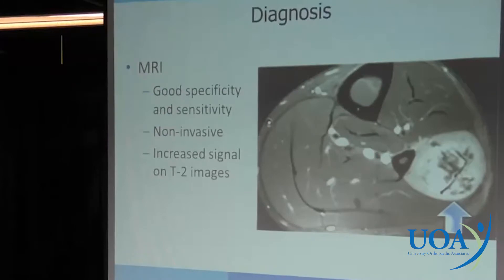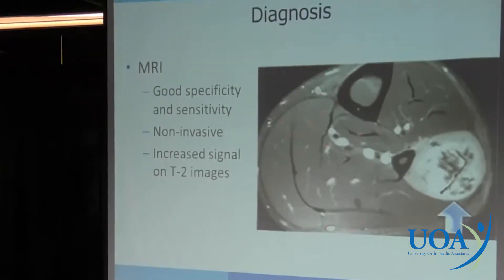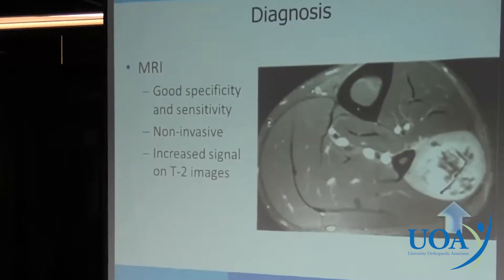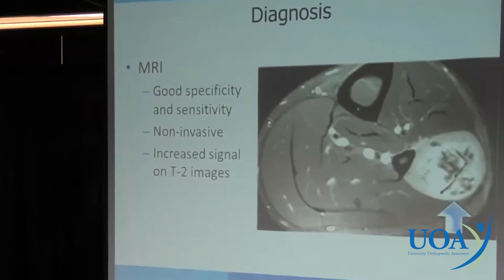MRI has gained a little bit of popularity. What's nice is you get great anatomy — you can see the gastroc-soleus complex, the deep posterior group, the anterior group, and the lateral compartment, and the affected compartment just lights right up. It shows you exactly which compartment is involved, which helps you surgically to know what to release. What you're seeing is an increased signal on a T2-weighted image — T2 is what makes things with edema look white.